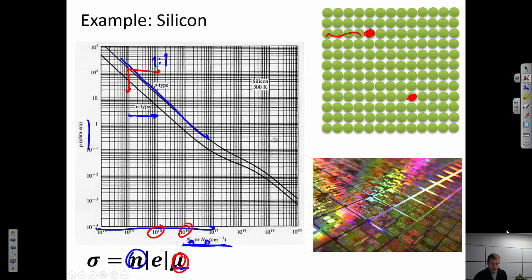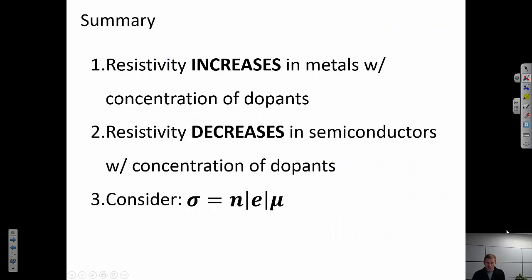So 10 to the 15th per centimeter cubed is still part per million type range rather than 1 to 10 percent, like in that nichrome wire example.